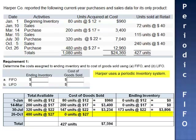None of the 480 units purchased on October 26th have been expensed, which means those units are still in ending inventory. 480 multiplied by $27 is $12,960. The value of the 653 units left in ending inventory is $16,766, assuming Periodic FIFO.